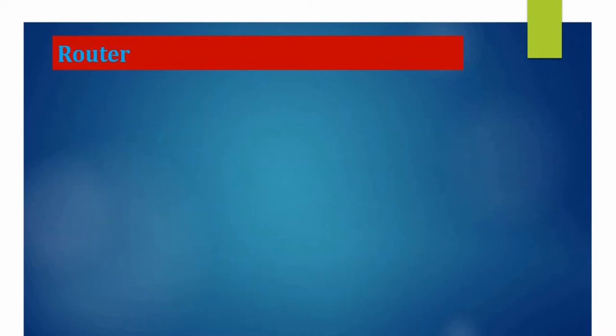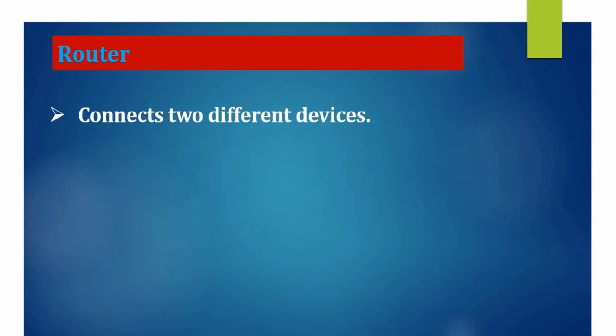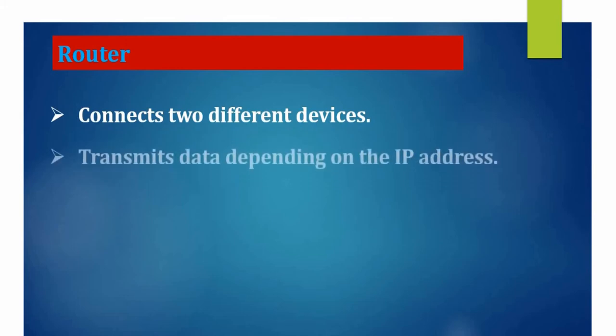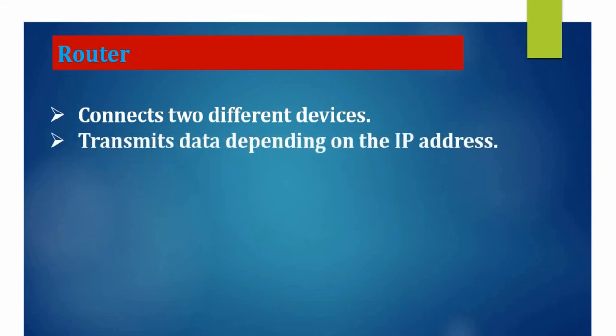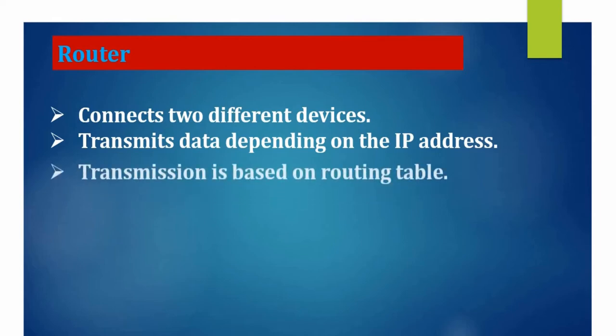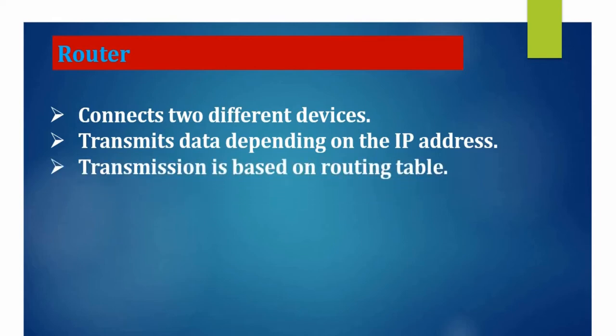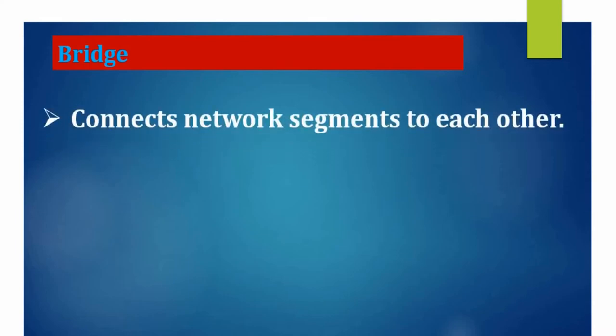The switch device involves certain techniques to transmit data, so it performs better than hub. Another device is the router. The router connects two different devices and transmits data depending on the IP address of the particular device. The router also contains a table called a routing table, using which it transmits the data.